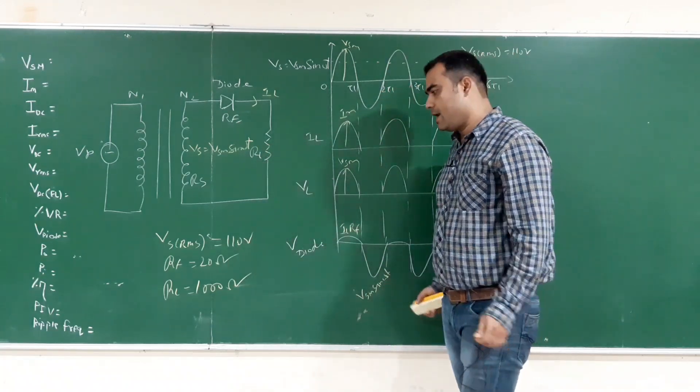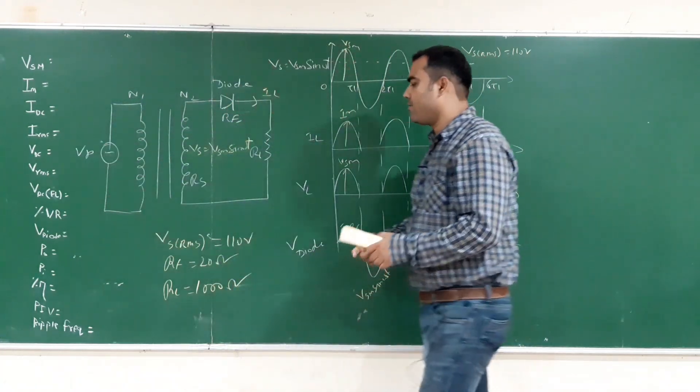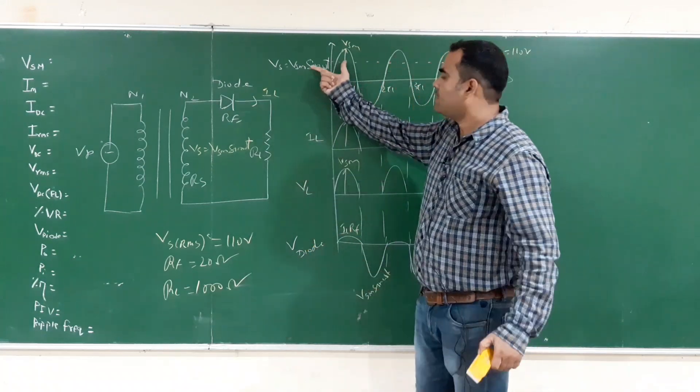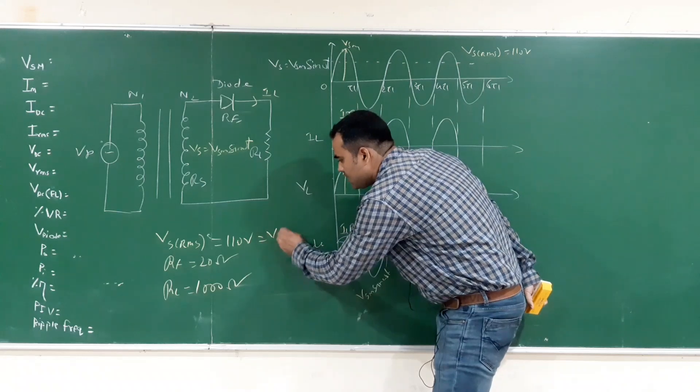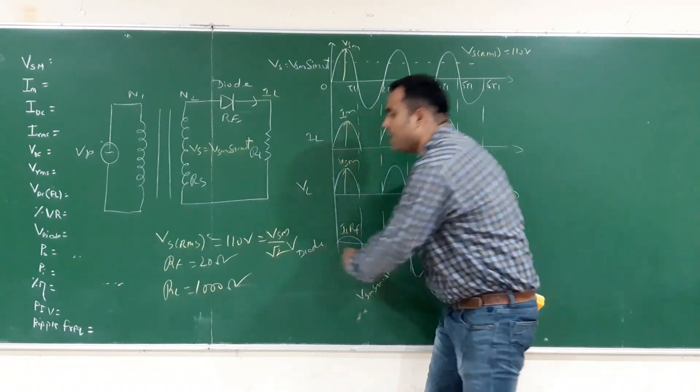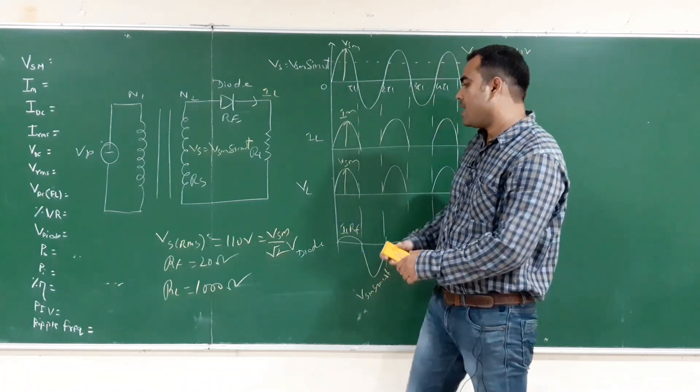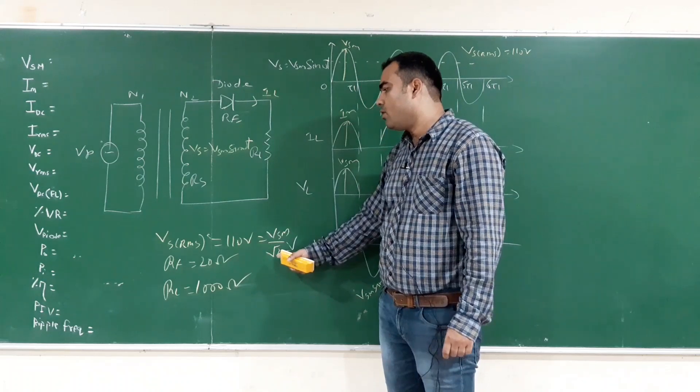Now to solve the numerical first you have to calculate Vsm. The sine wave's RMS value that is VsRMS equals to Vsm upon root 2. Using this relation we will calculate Vsm. From here we get Vsm which is 110 into root 2.